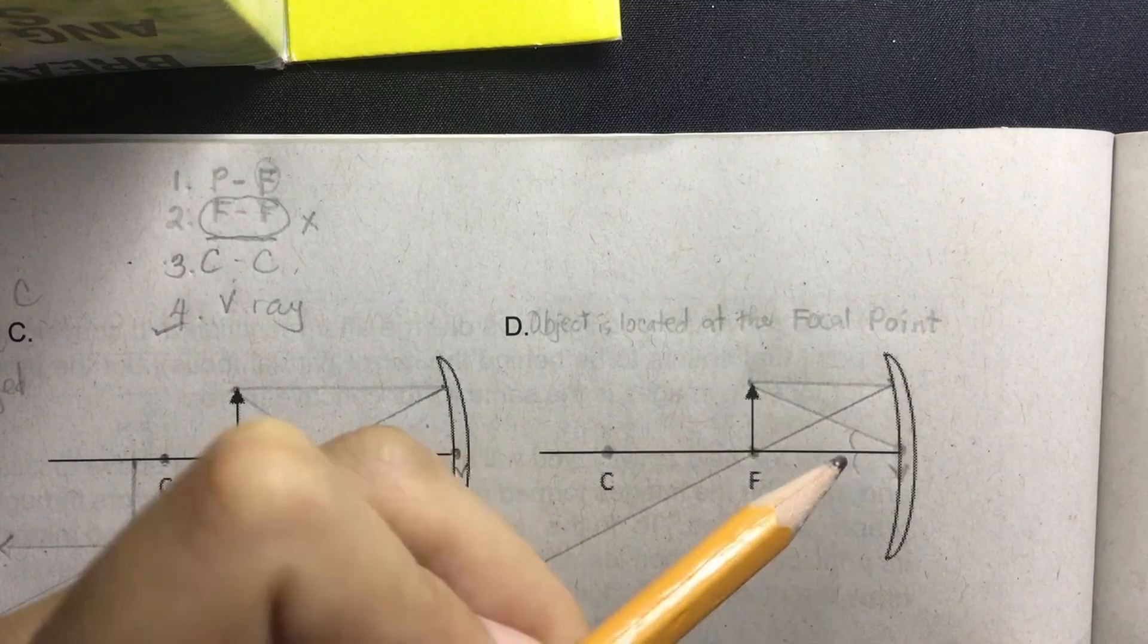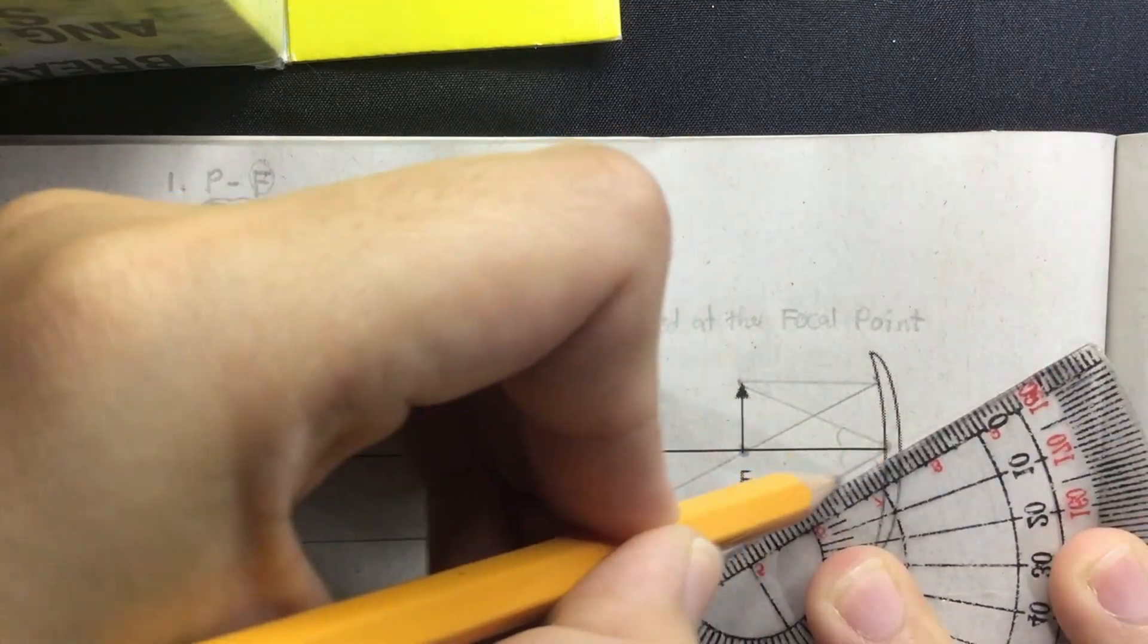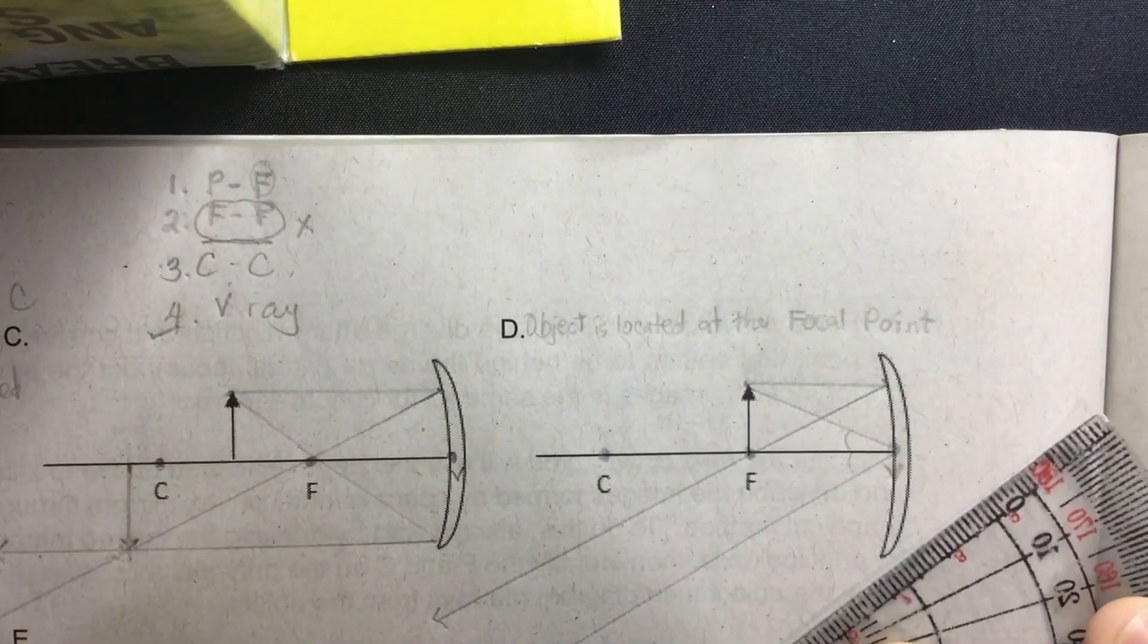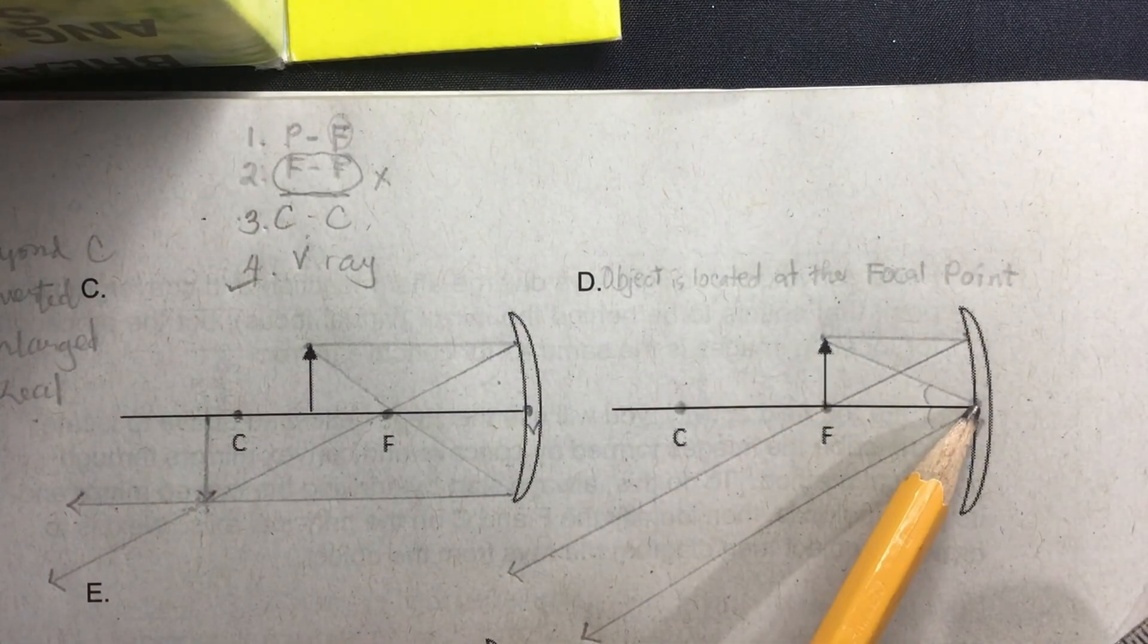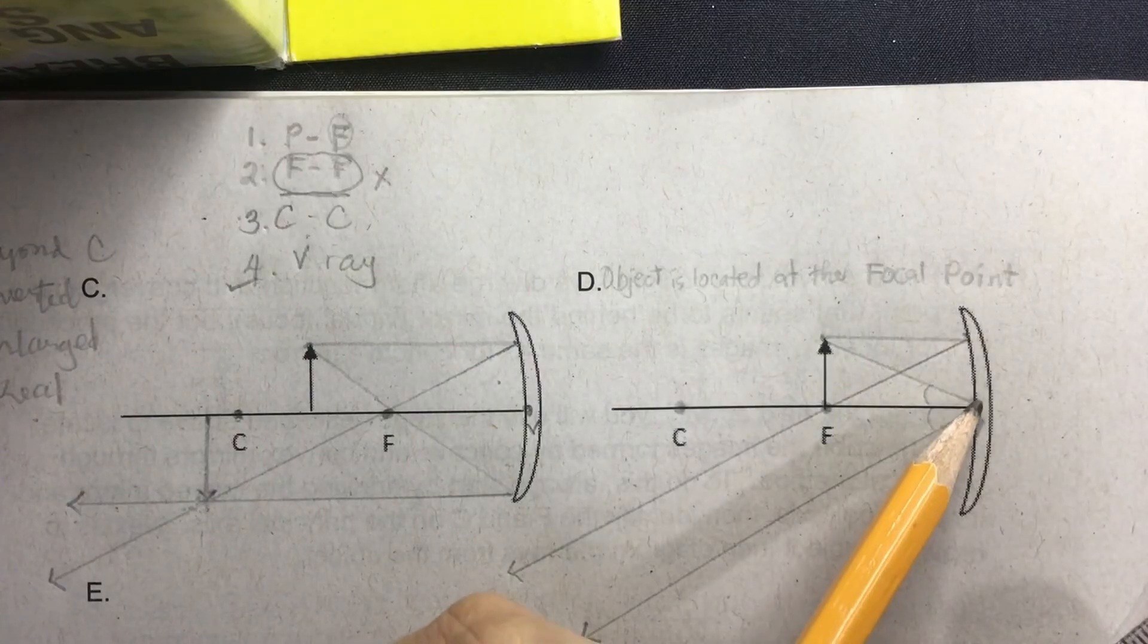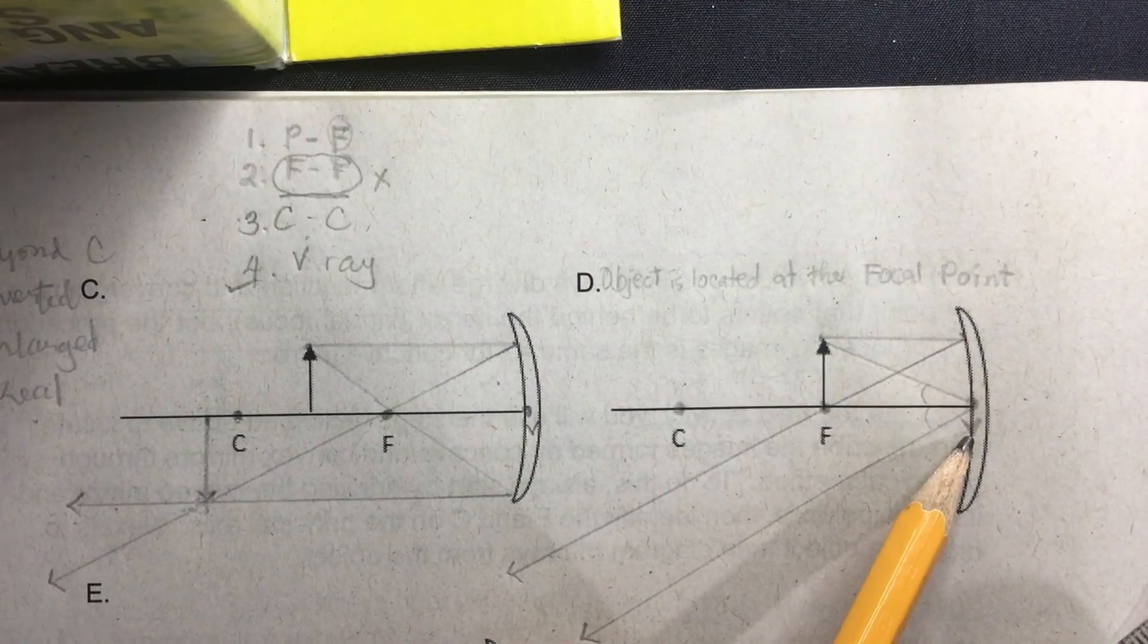So it is reflected at an angle equal to the incident ray. So this is our V ray. Aside from forming the letter V, it is a ray of light that is directed towards the vertex of the mirror. Okay, so this is the vertex of the mirror.